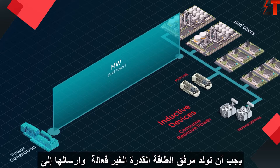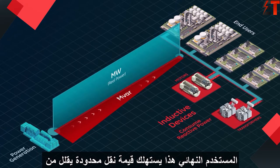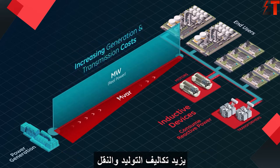The power utility must generate reactive power and send it to the end user. This consumes valuable limited transmission capacity, lowers the transmission voltage profile, and reduces efficiency significantly, increasing generation and transmission costs.